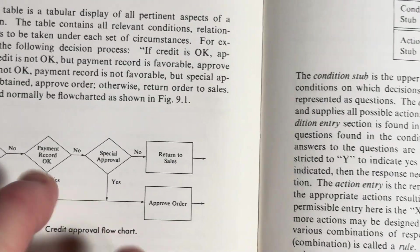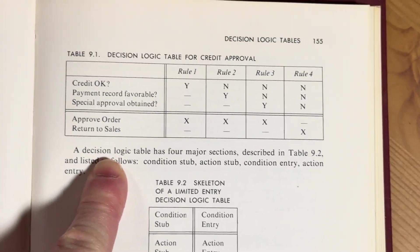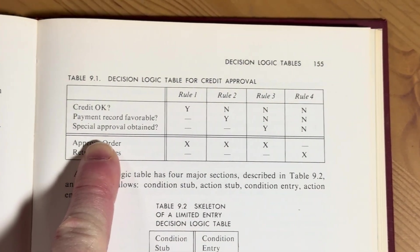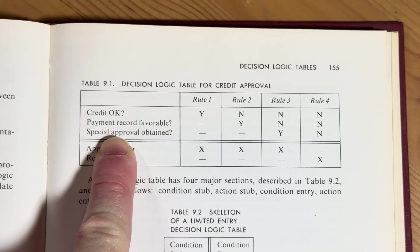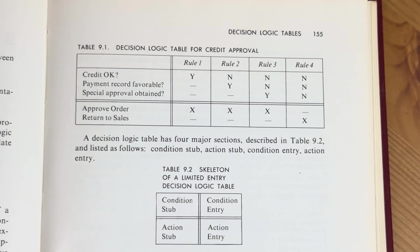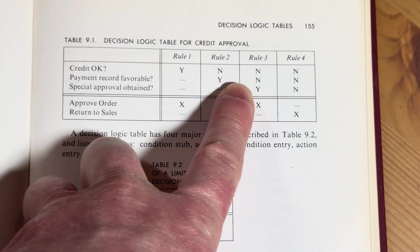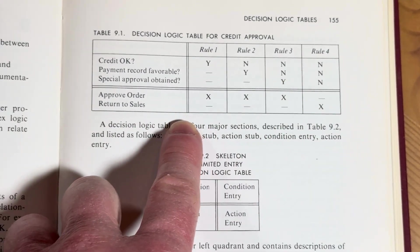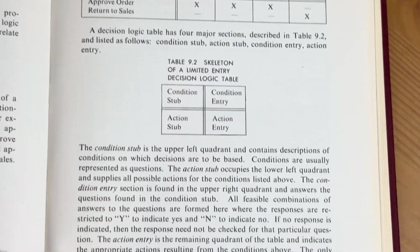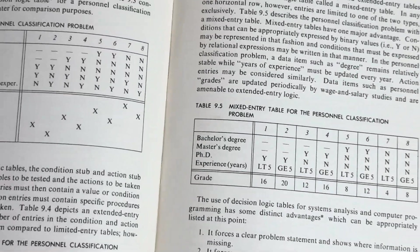I wonder what the credit is for. And then here, credit — I see it's a little bit different. Rule one, rule two, rule three, rule four. It's a different way.